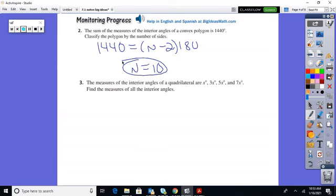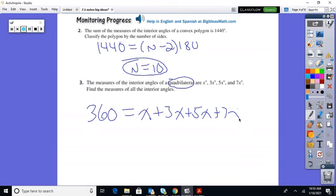Number 3. Quadrilateral. So I know it's 360. Equals X plus 3X plus 5X plus 7X. All right. So that's 16X. X is 22.5.